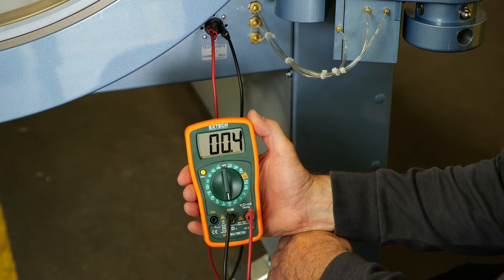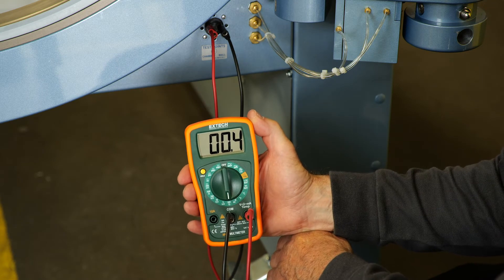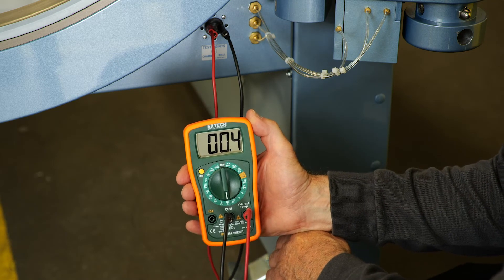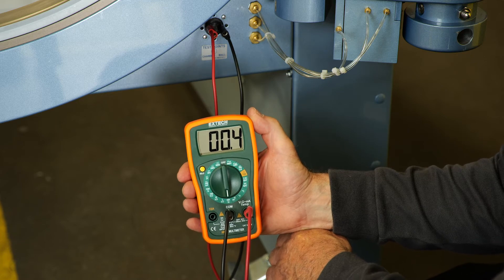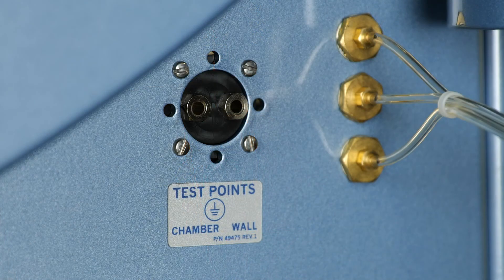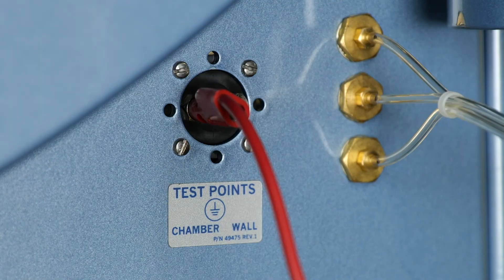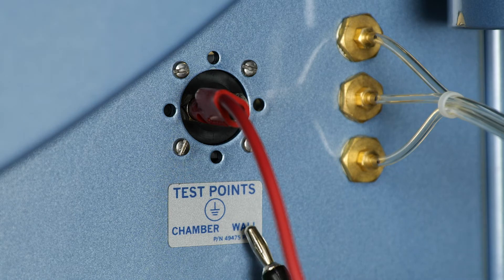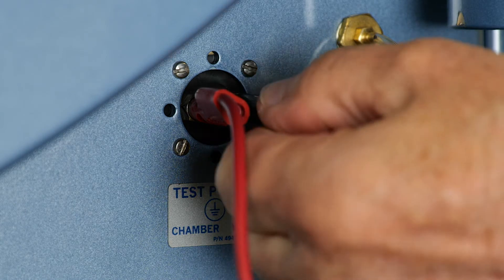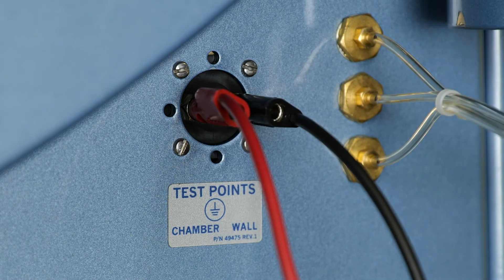To check the chamber ground on a chamber with the Seacrest grounding kit, you take the red and black leads and plug them into the common and ohm support on the meter. The red lead then goes to the chamber port on the chamber test point, and the black lead goes to the wall port on the chamber test point.